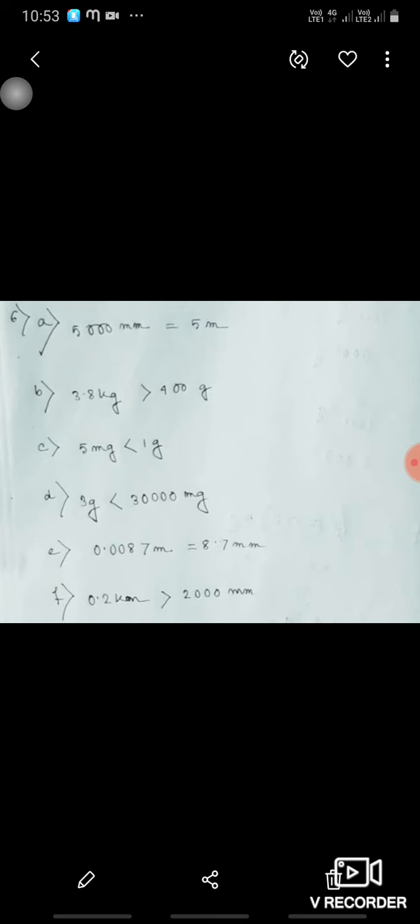6th A. 500 millimeter versus 5 meter. 3.8 kilogram or 400 gram, which is bigger? Here, 3.8 kilogram is bigger because if we convert 3.8 into gram, it will be 3800.